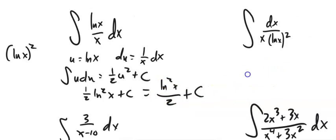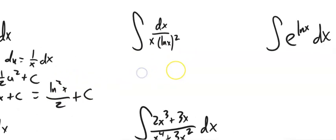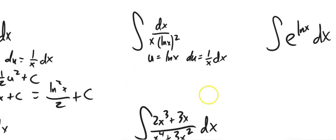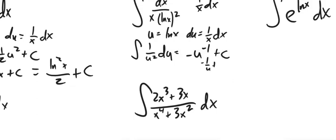Here's another one: the integral of dx over x times ln²(x). Let u equal ln(x), so du = (1/x)dx. The dx/x part becomes du, leaving us with the integral of 1/u², which is u to the negative 2. The integral of that is negative 1/u, so plugging back in we get negative 1 over ln(x) plus C.